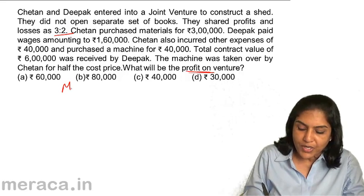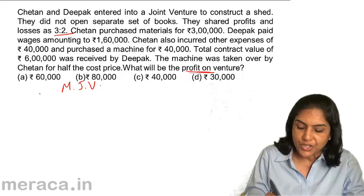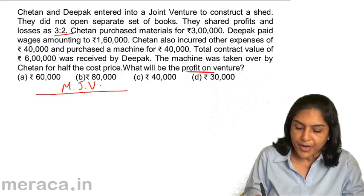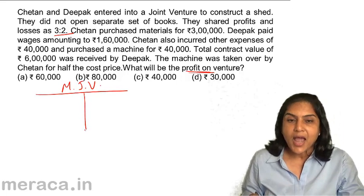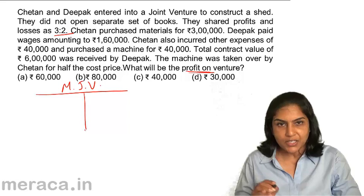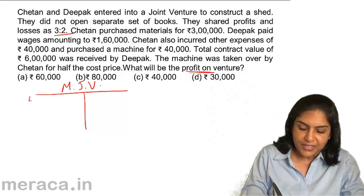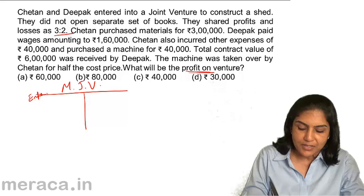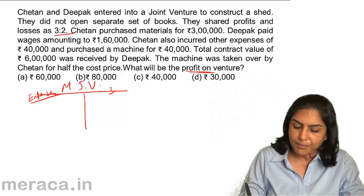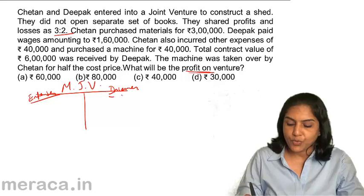What would be the joint venture account? If we just write a memorandum joint venture like this and put all the expenses on the left side and all the incomes on the right side — expenses on one side and all incomes on the other side.